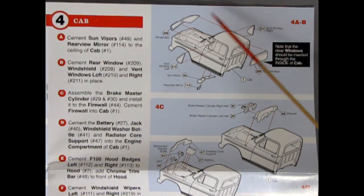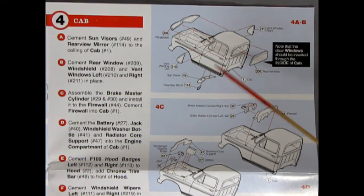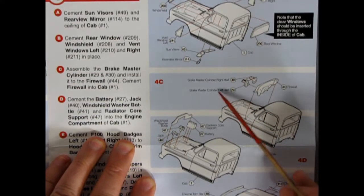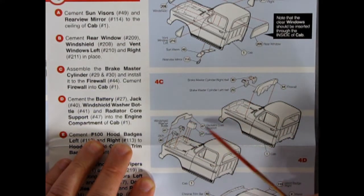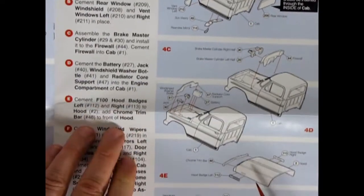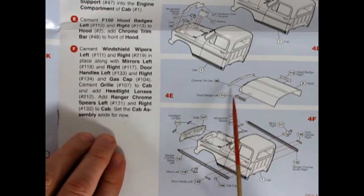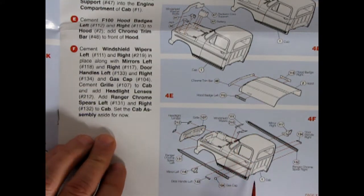Step four is really the bomb as we glue our glass into our cab. Note that the clear windows should be inserted through the inside of the cab, so don't glue them from the outside. We have sun visors gluing up top there, a rear view mirror as well. We've got our brake master cylinder, right and left hand side instead of front and back. Our firewall going into place, there's our radiator support, battery, windshield washer bottle, and a car jack all sitting up underneath. There's our hood with the chrome trim bar and left and right badges gluing on.